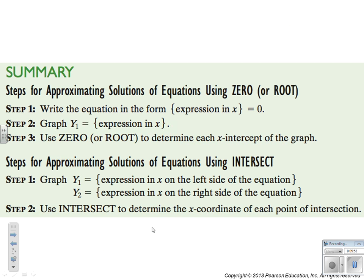All right, so here are the steps for using the zero function or root function. When you have an equation that's equal to zero, you can just graph it as y equals your expression. And then, if you're using Desmos, you just click on the zero. If you have an expression on the right and an expression on the left that doesn't include zero, you do y1 and y2, so two different equations, and find where they intersect.